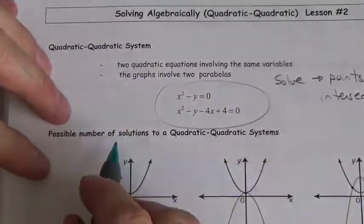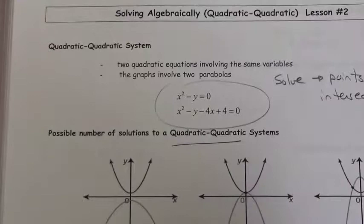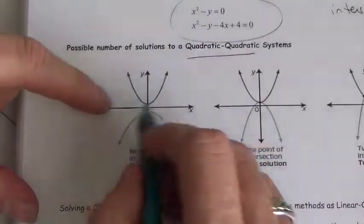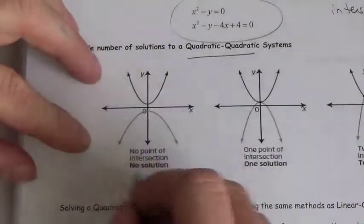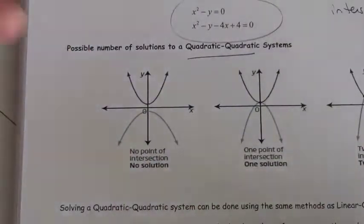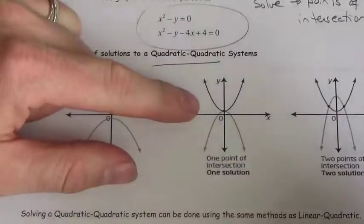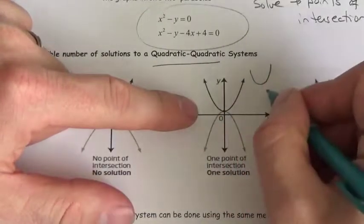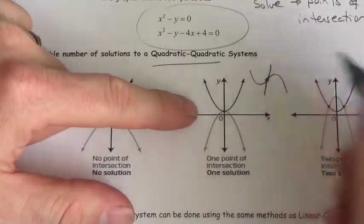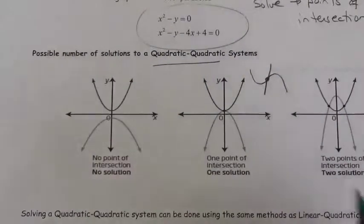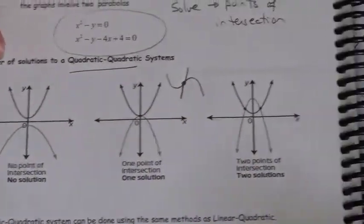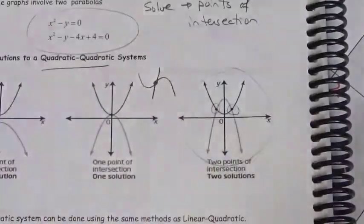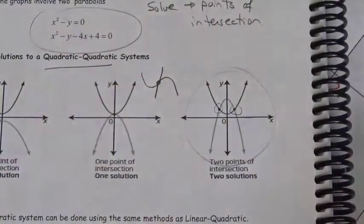When it comes to the way two parabolas or two quadratics can interact with each other, we've got three different possibilities — well, four really, but three ones that are of interest to us. First of all, it is possible that the two of them don't even intersect, so there's no solution. It is possible that they are tangent to one another — they intersect at one point, and that doesn't have to be the vertex. Or you could have them intersect at two different distinct points.